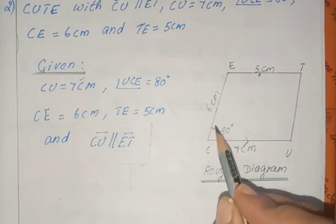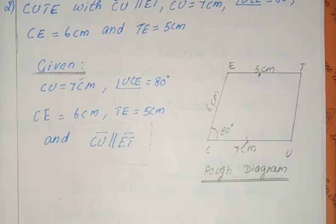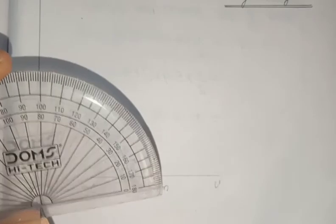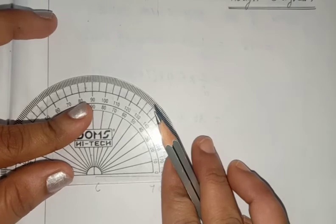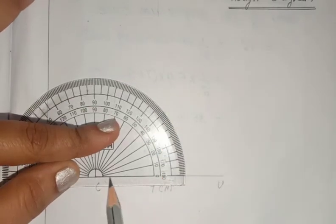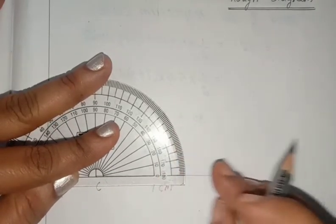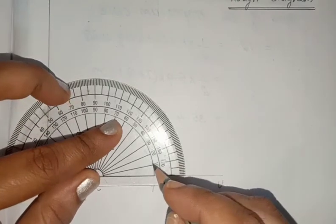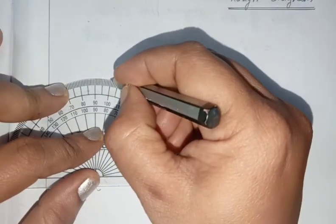Now we have to mark the angle UCE equal to 80 degrees. Take the protractor. Keep the midpoint on point C so that it is coincident with the baseline. From 0, count to 80 degrees — 0, 10, 20, 30, 40, 50, 60, 70, 80. Keep a point here at 80 degrees.